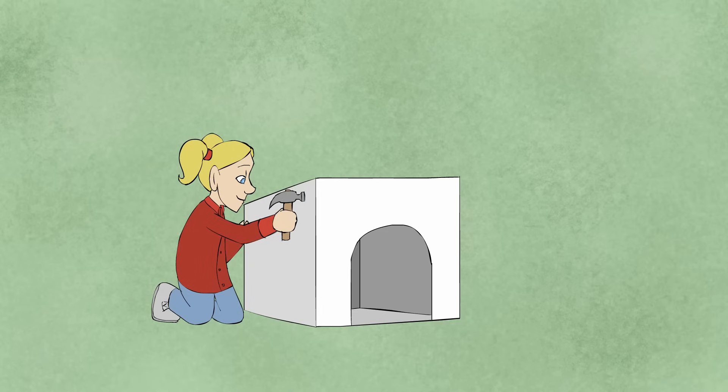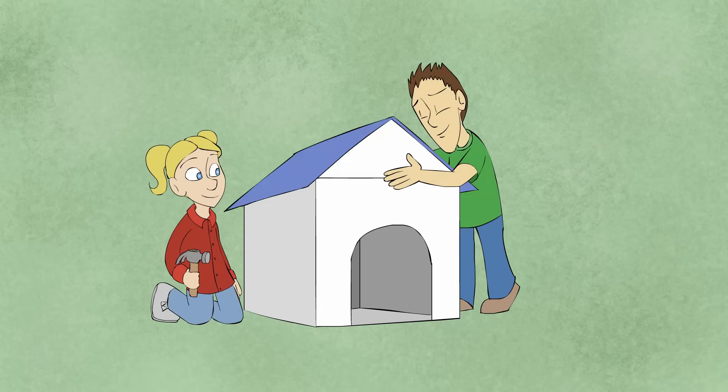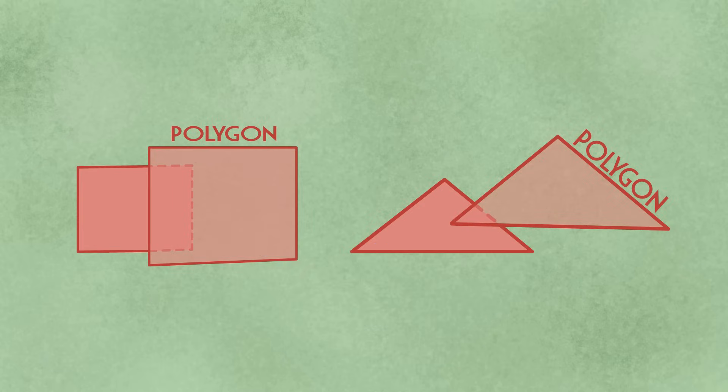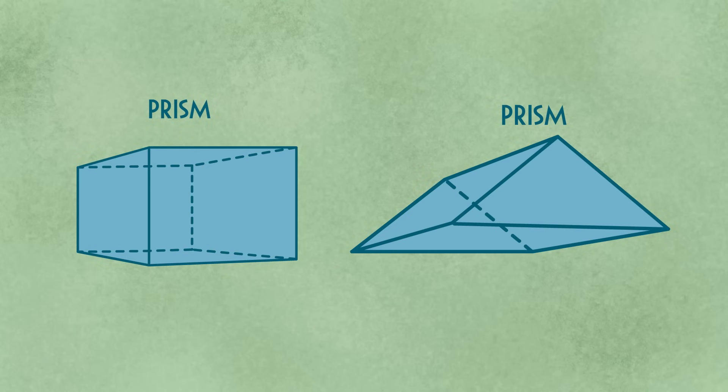Some prisms are rectangular, like a room, some prisms are triangular, like a roof. Polygons with edges joining at the vertices make a prism, as you can see.